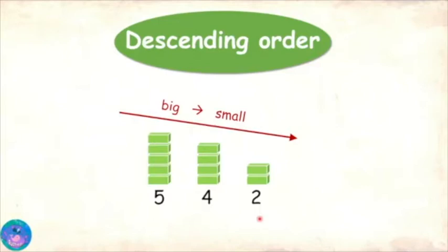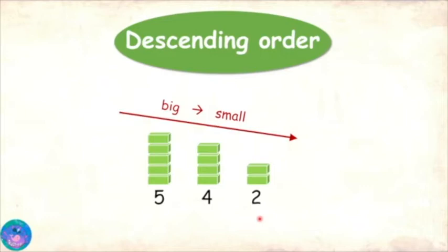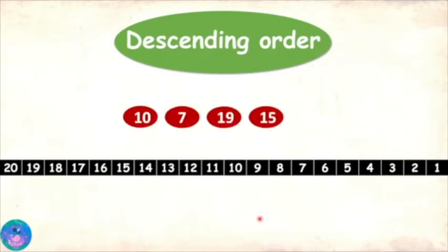In the last class I learned that one way to arrange numbers in ascending order was to do forward counting and arrange the numbers in the order they appear while doing forward counting. If descending is the opposite of ascending, can we use counting backwards? Why don't you try?